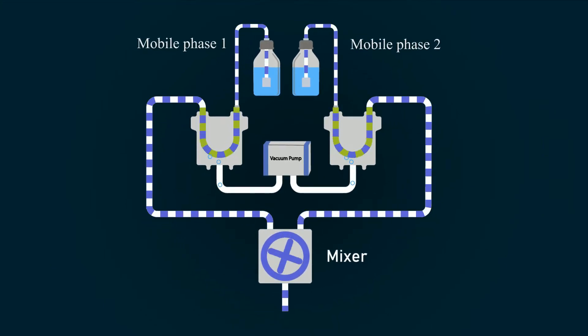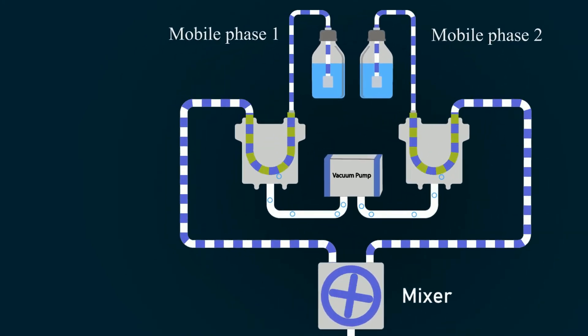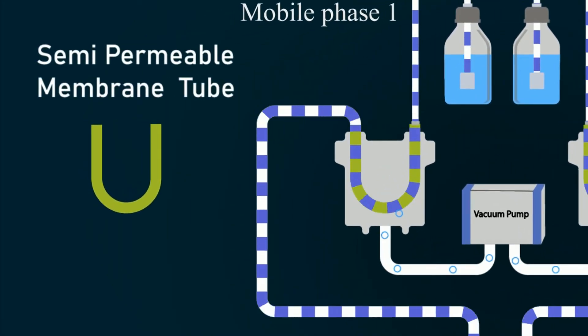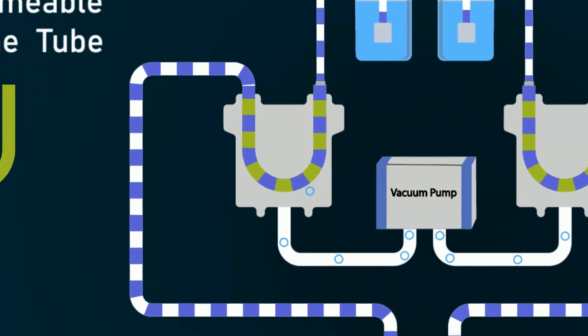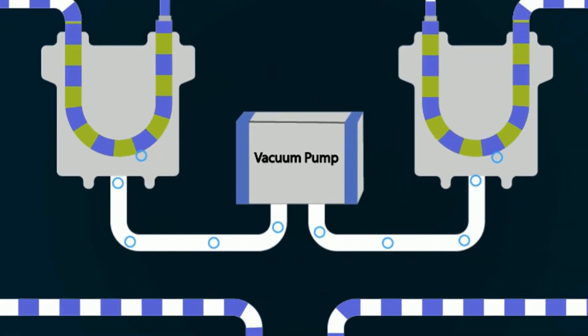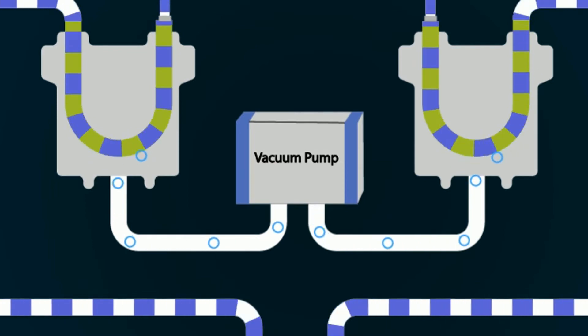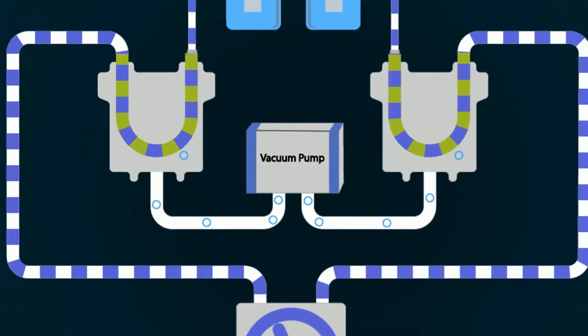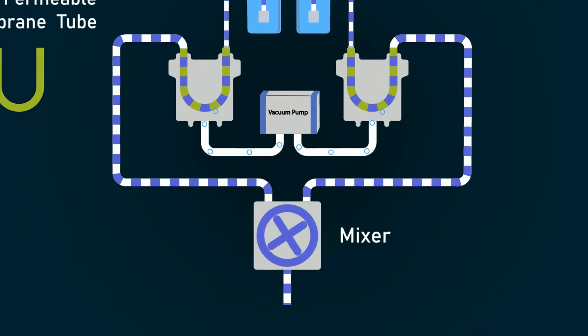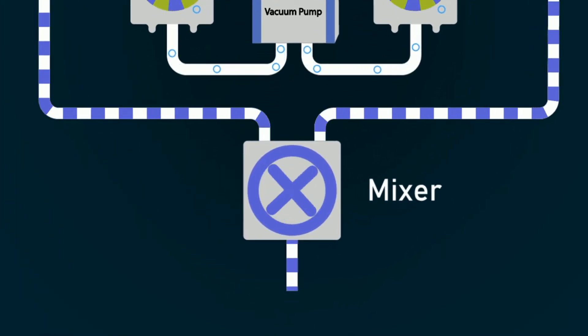The vacuum pump sucks the gas bubbles from the semi-permeable membrane tube. As you can see, all the bubbles are moving from the stream to the vacuum pump. And then the solvents are mixed using the mixer.